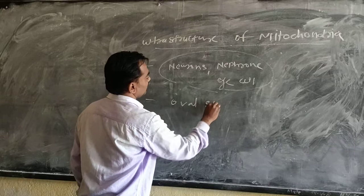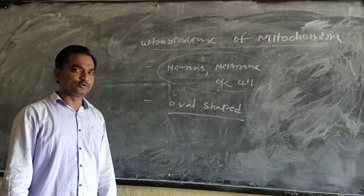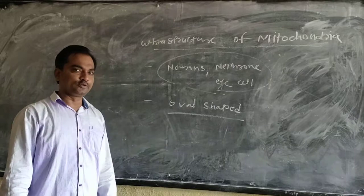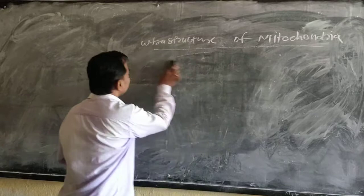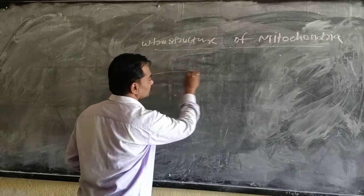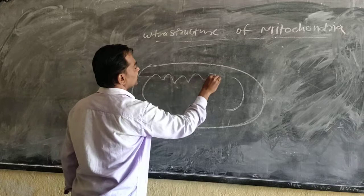The shape of mitochondria is an oval-shaped structure. The number of mitochondria varies from cell to cell, but the number is high in metabolically active cells. Let us now see the ultra structure of mitochondria. I will draw a figure here. Mitochondria is an oval-shaped structure present only in eukaryotic cells.